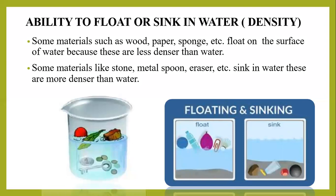Next property: ability to float or sink in water. Some materials such as wood, paper, sponge, etc. float on the surface of water because these are less dense than water. Some materials like stone, metal spoon, eraser, etc. sink in water — these are more dense than water. As you can see in both the pictures, there are some substances which can float on water and some which can sink in water.